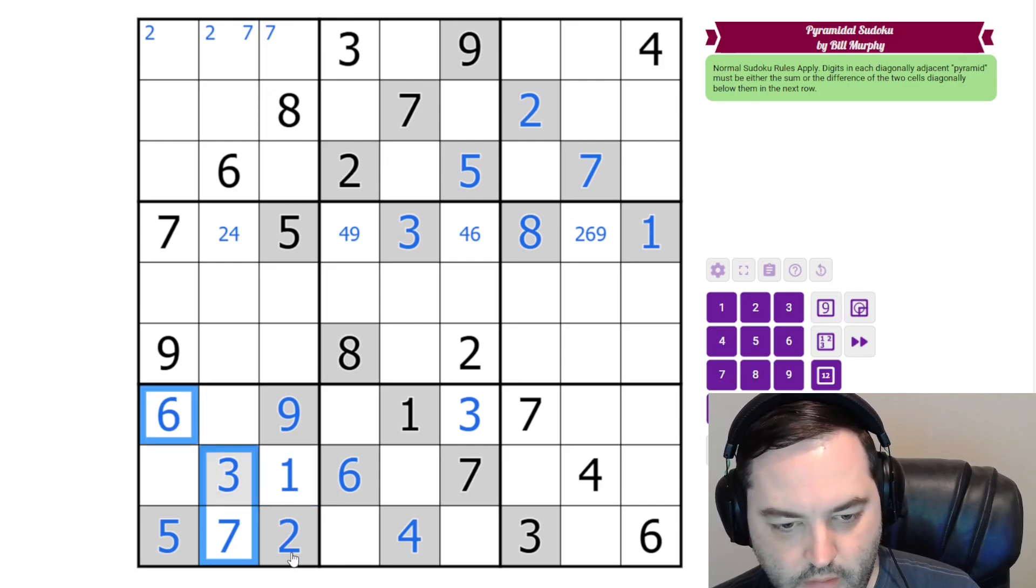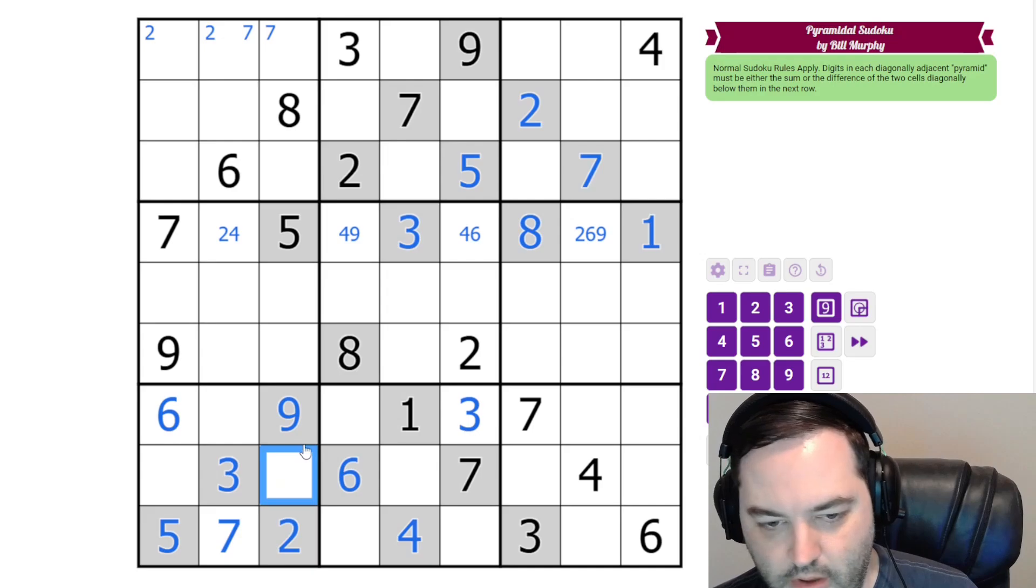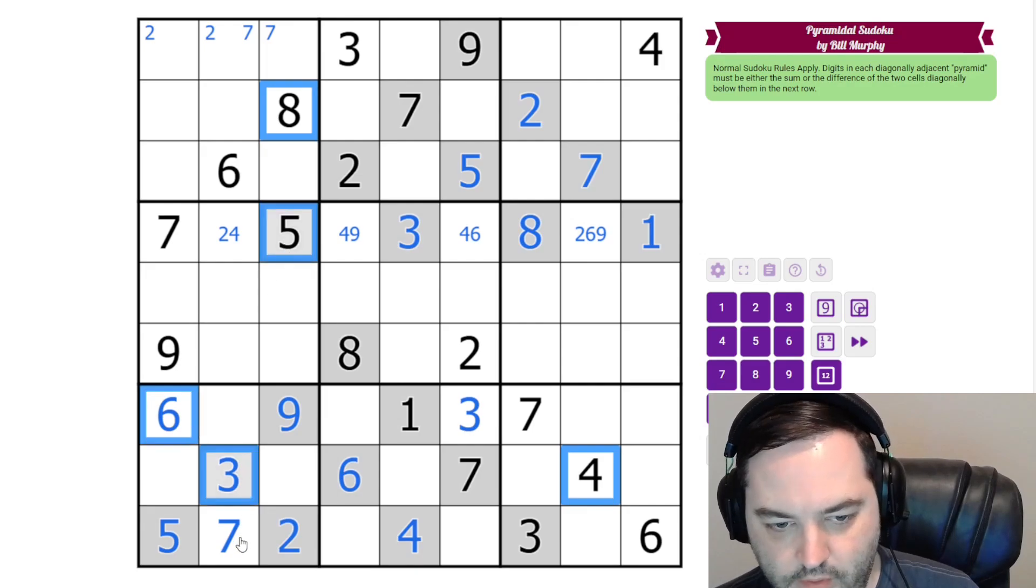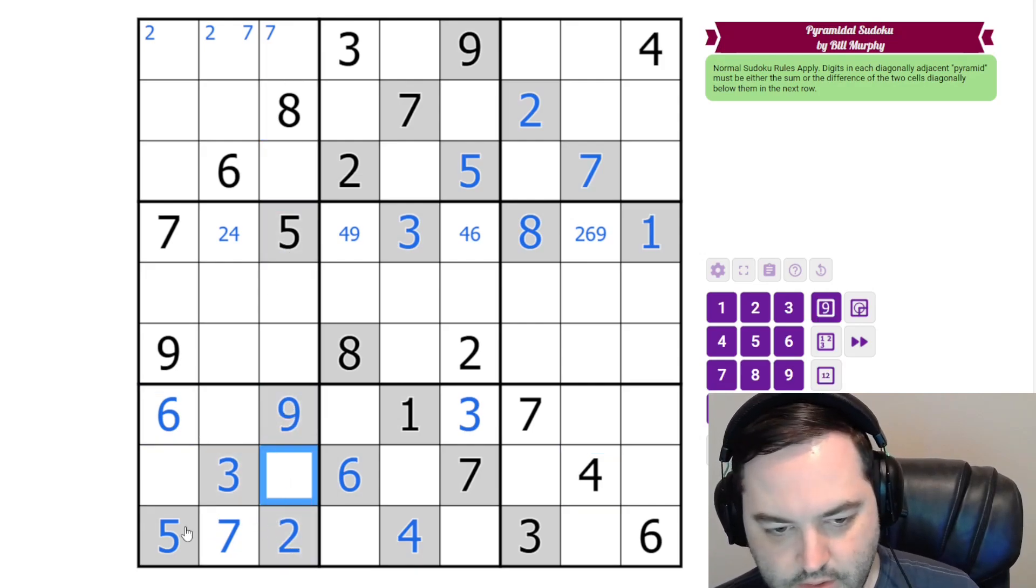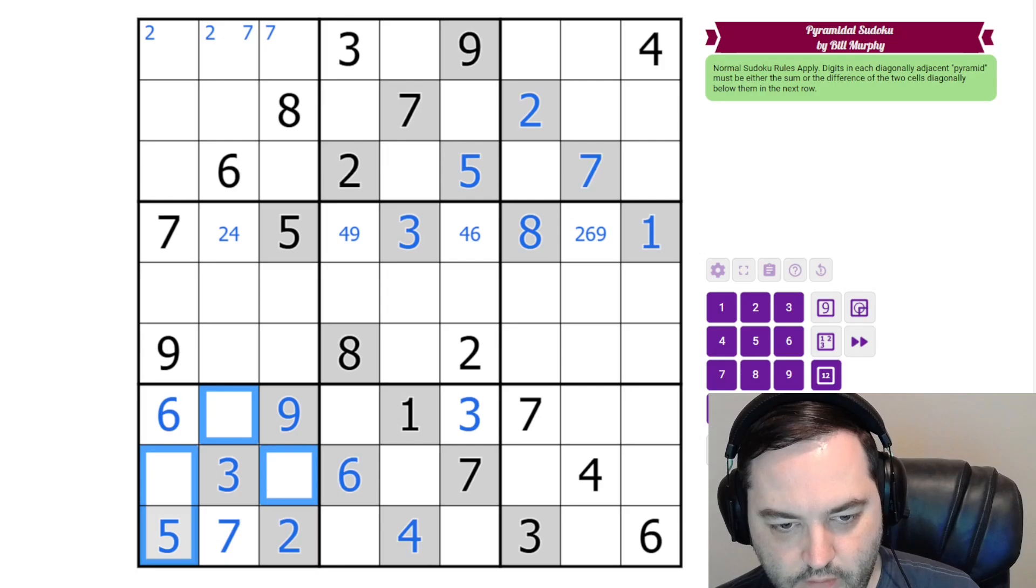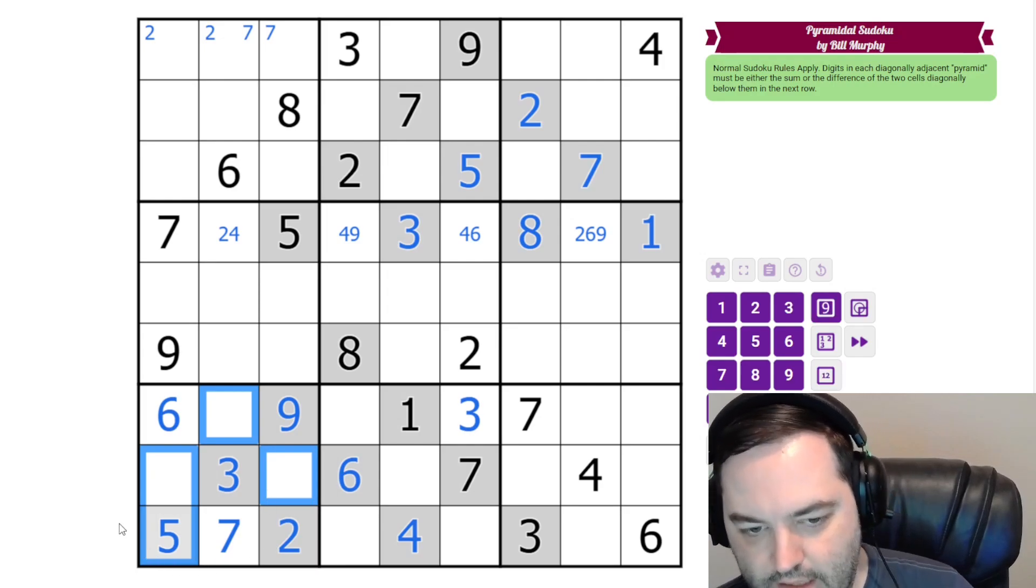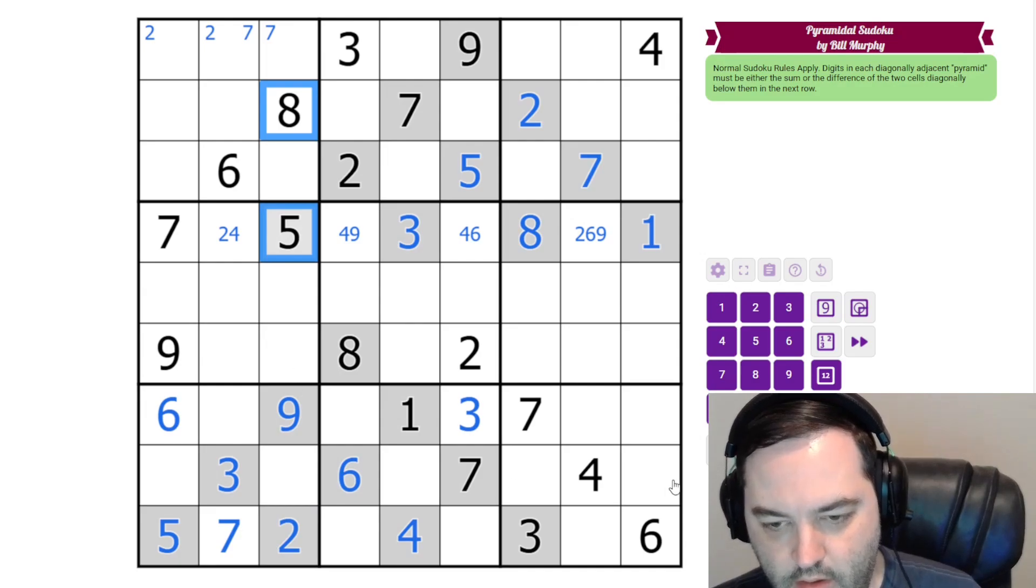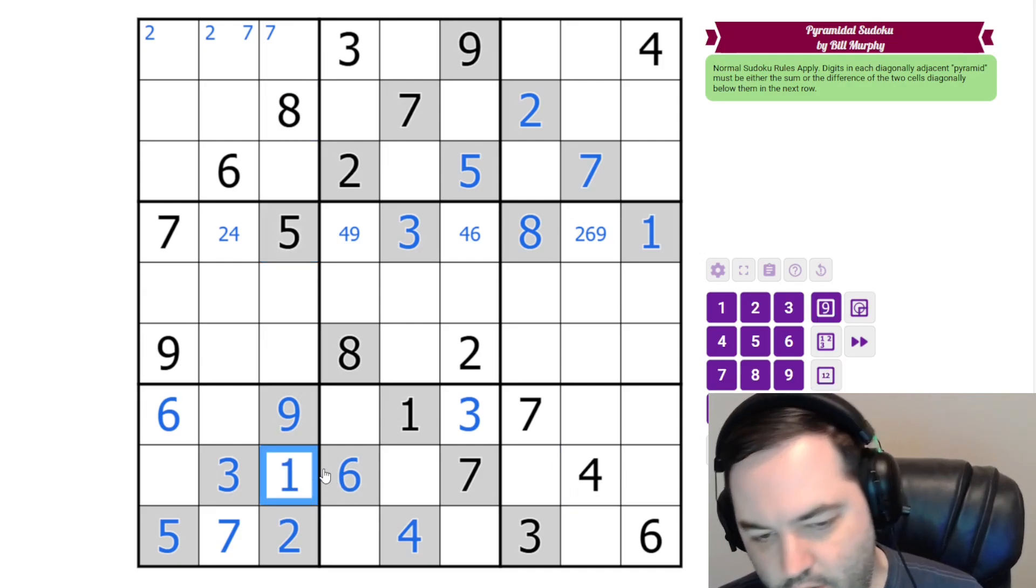So it's a one and that resolves our five. And the way I saw that, by the way, just looking at this, it might not be obvious that this is a naked single. We're looking at digits and columns and boxes and stuff. What I was actually doing in my head there was we need one, four, five, and eight in these cells. And then I looked at this. Oh, there's a five and eight here. Oh, there's a four here. And that's how I got there.